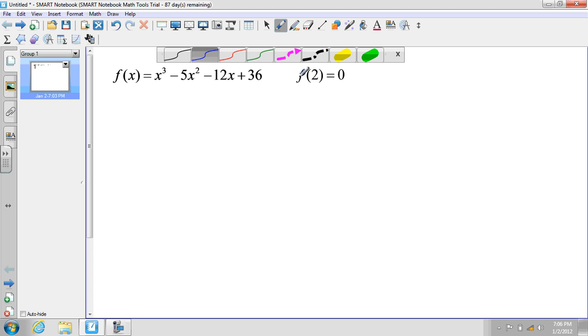So what this means when they say f(2) = 0 is they're telling us that x = 2 is a factor, because if we solve for x = 2, we're going to get 0 as our remainder, so it's going to be a factor of this polynomial.